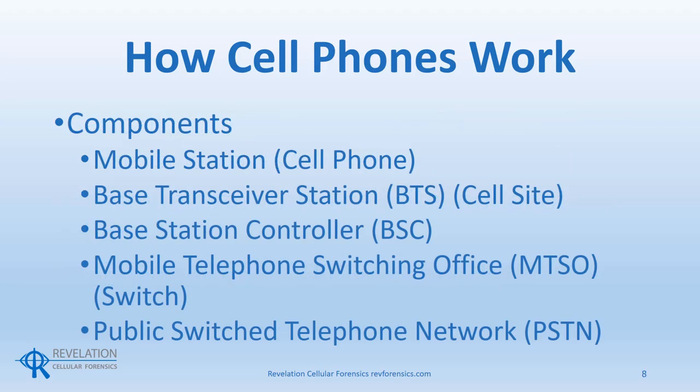The components of a cellular network are as follows. The mobile station, which is the cell phone or handset. The base transceiver station, BTS, which is the cell site or tower. The base station controller, or BSC. The mobile telephone switching office, MTSO, sometimes called the mobile switching services center, MSC — this is also called the switch. And the public switched telephone network, or PSTN, which is the old copper telephone network.